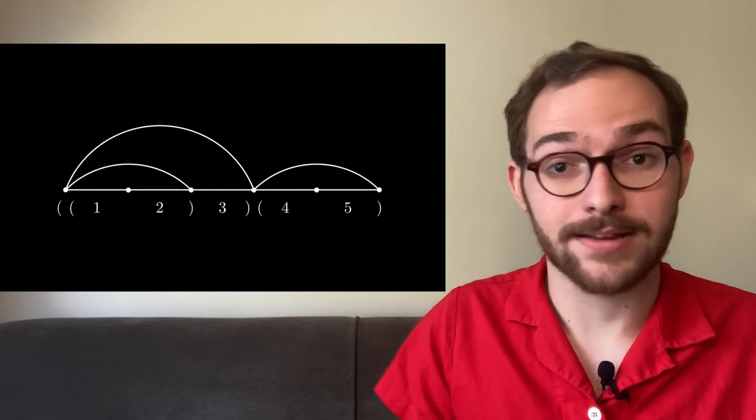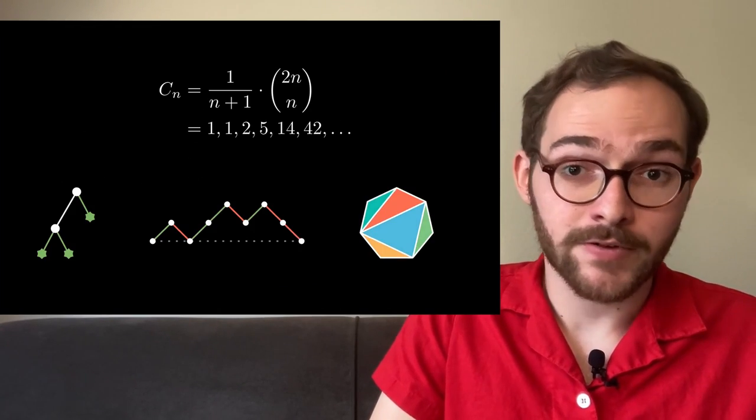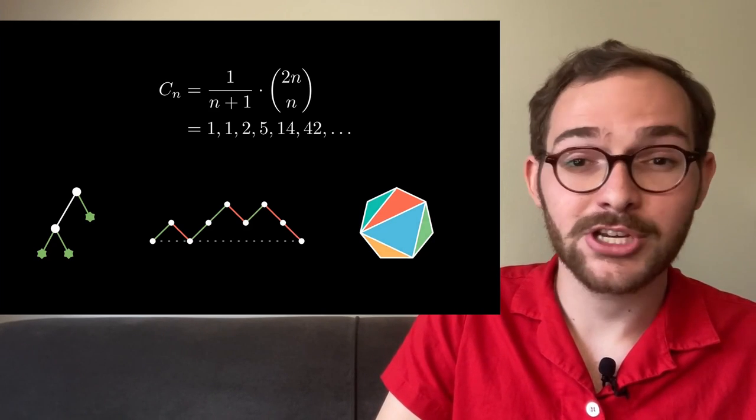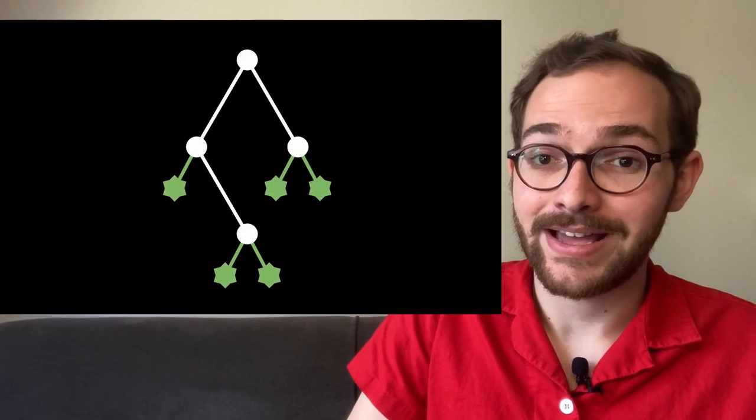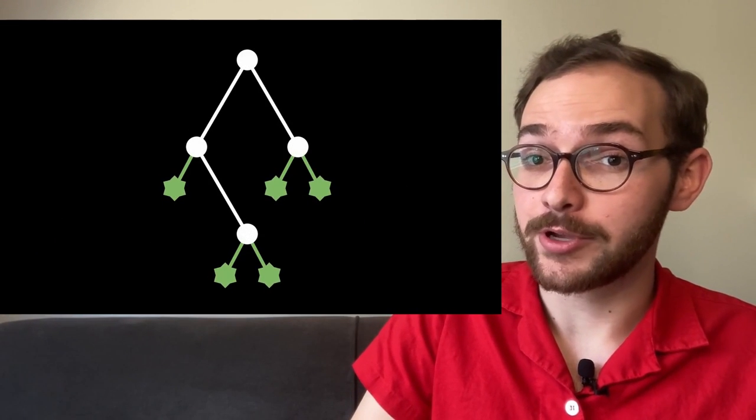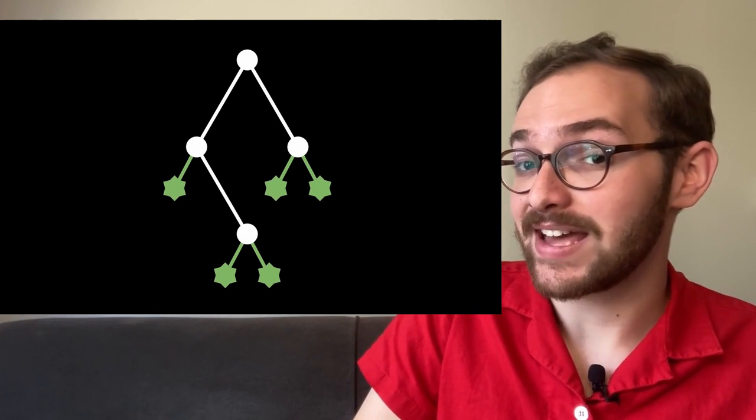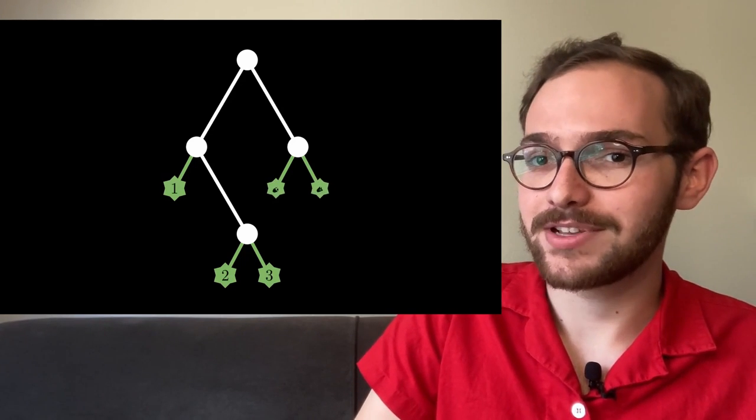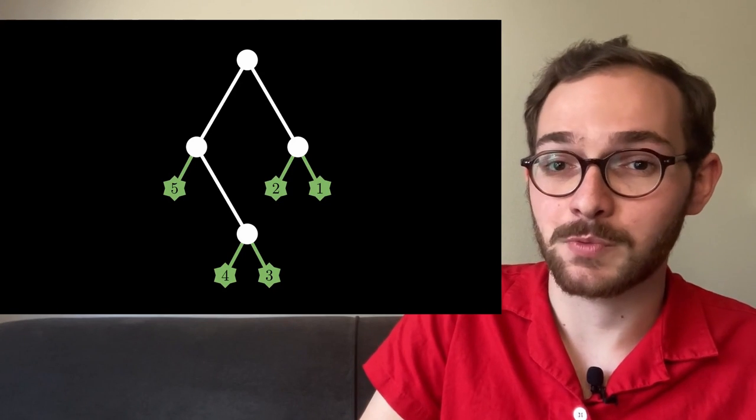At the start of the video we flashed a formula for the Catalan numbers, and if you stuck around this long, you might appreciate the following beautiful proof. As we know, C_n is the number of full binary trees with 2n+1 total nodes. Each tree has n+1 leaves—that is, nodes with no children—so there's (n+1)! ways of ordering the leaves from 1 to n+1. I'm going to call these leaf-labeled binary trees, or LLBs for short.